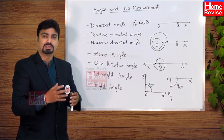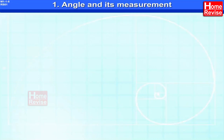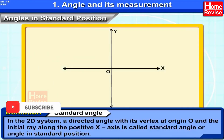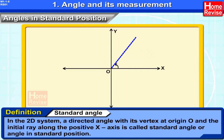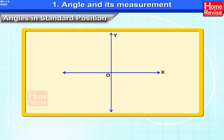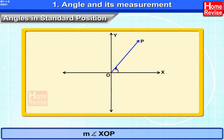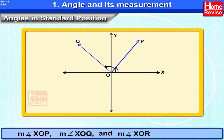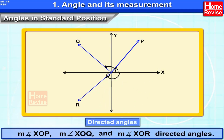Standard Angles. In a 2D system, a directed angle with its vertex at origin O and the initial ray along the positive x-axis is called a standard angle or angle in standard position. In an XY coordinate geometry system, directed angles XOP, XOQ, and XOR are examples of directed angles in standard position.